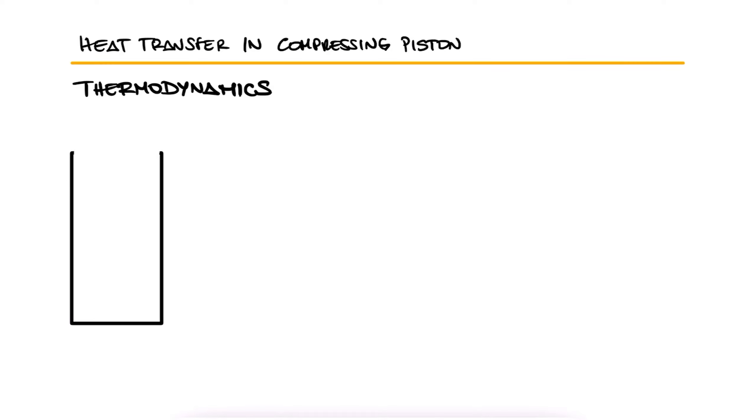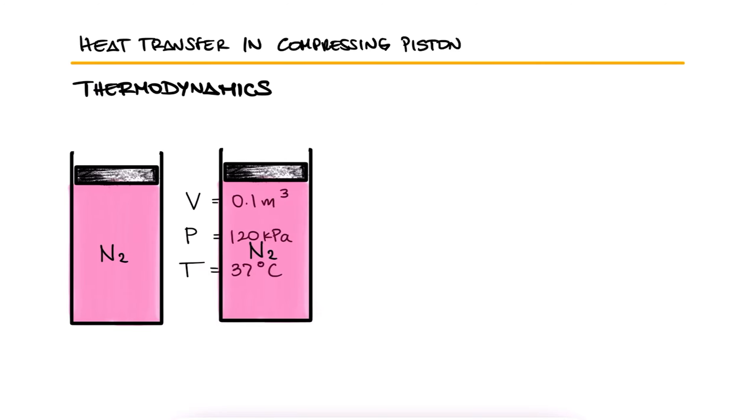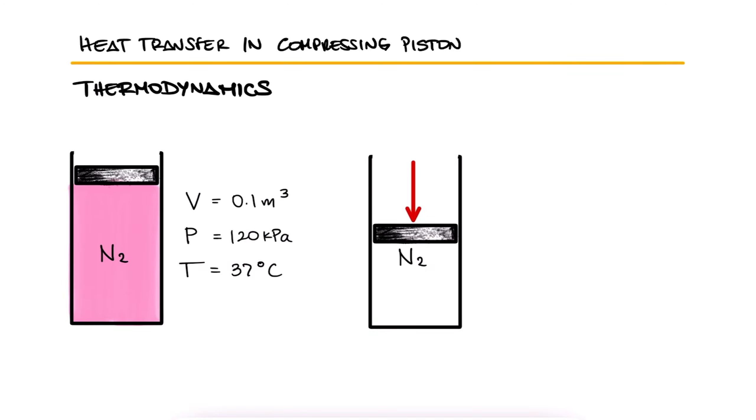A cylinder is fitted with a piston and has an initial volume of 0.1 cubic meters and contains nitrogen gas at 100 kilopascals and 37 degrees Celsius. The piston is moved, compressing the nitrogen until the pressure is 1.2 megapascals and the temperature 167 degrees Celsius.